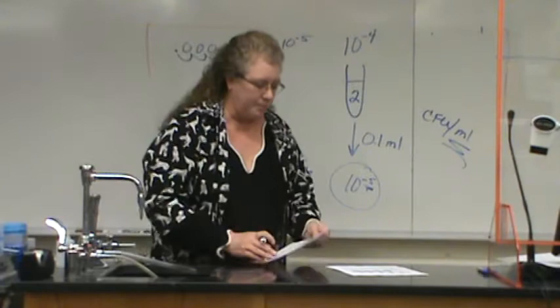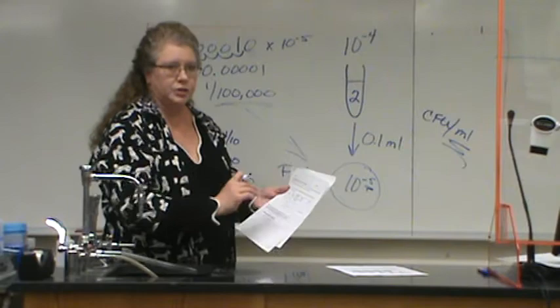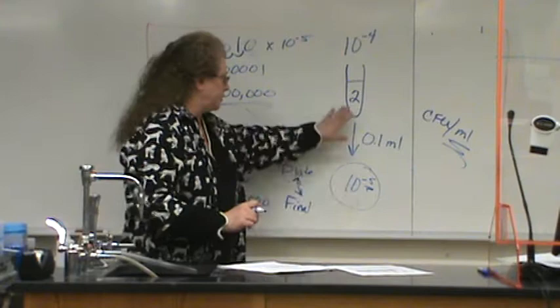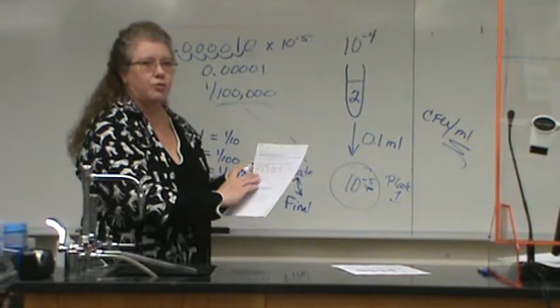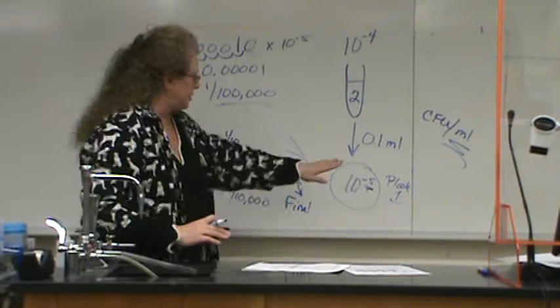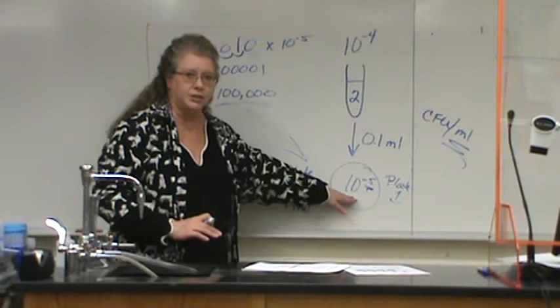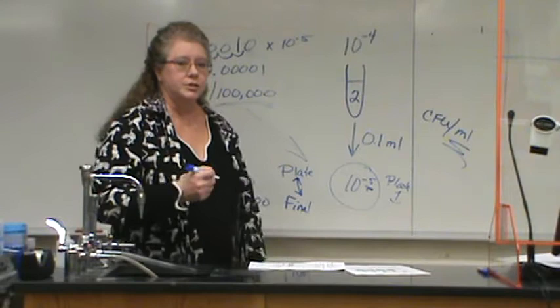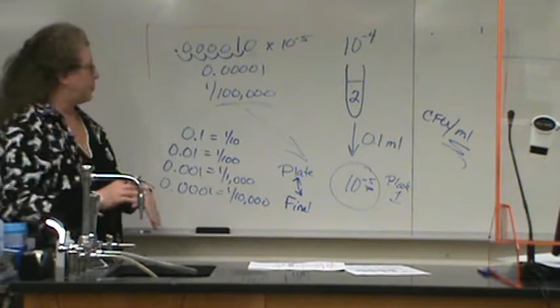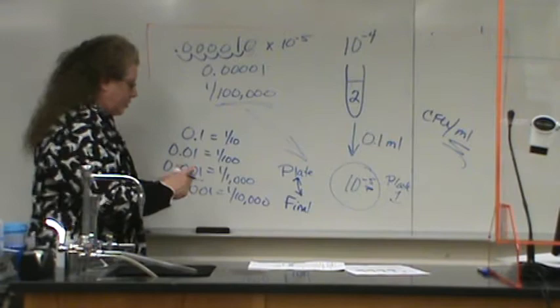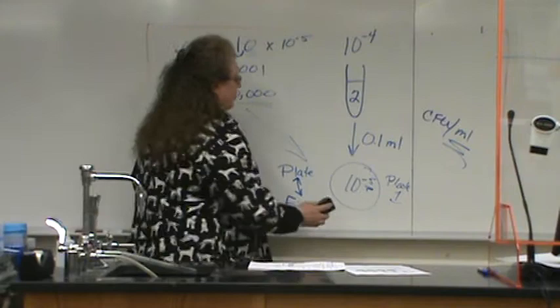In the assignment, the first three columns are filled in for you: the plate number, the tube dilution (10 to the negative 4th), and the volume plated (0.1 mL). Then it asks what the final dilution is — that is 10 to the negative 5th, the plate dilution. Next it asks for the number of colonies, which you count and enter. Then you calculate CFUs per milliliter.